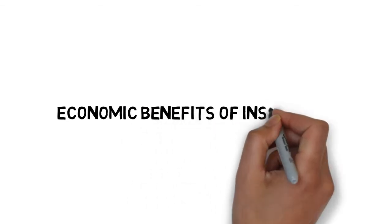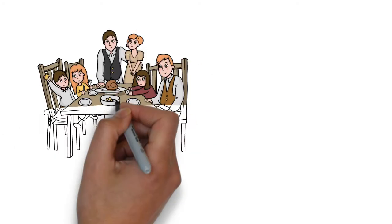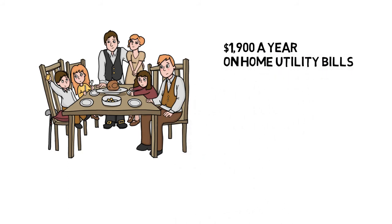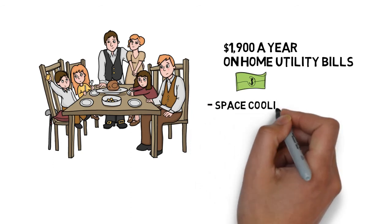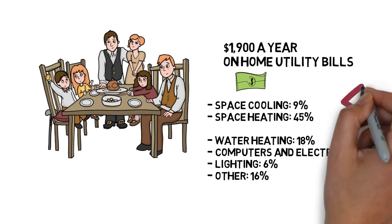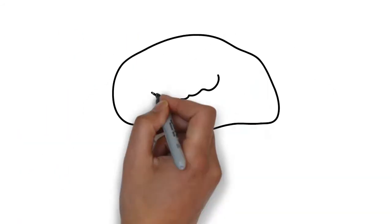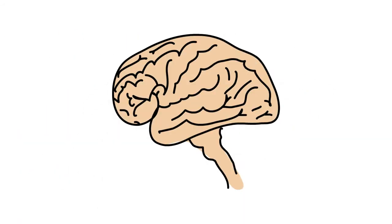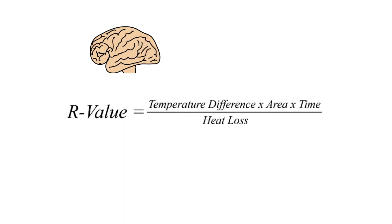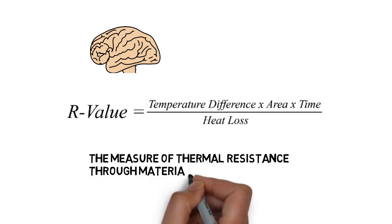That is why I am going to talk about the economic benefits of insulation. The average American family spends $1,900 per year on home utility bills. Heating and cooling account for the largest portion of residential utility bills, especially in cold areas like Illinois, reaching more than 50% of the bill. Let's remember an important factor we covered in class — the R-value, which is the measure of thermal resistance through materials such as insulation and assemblies of materials. A high R-value is equivalent to a good insulator.